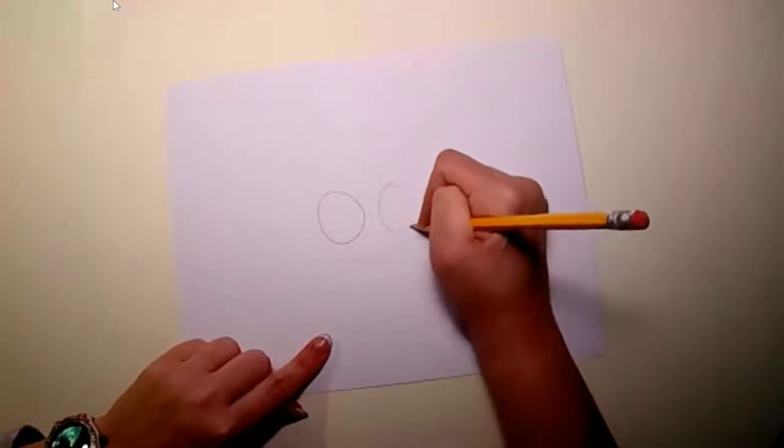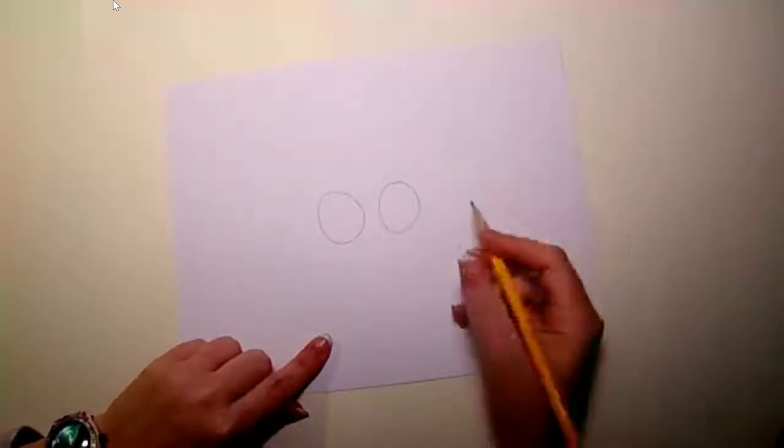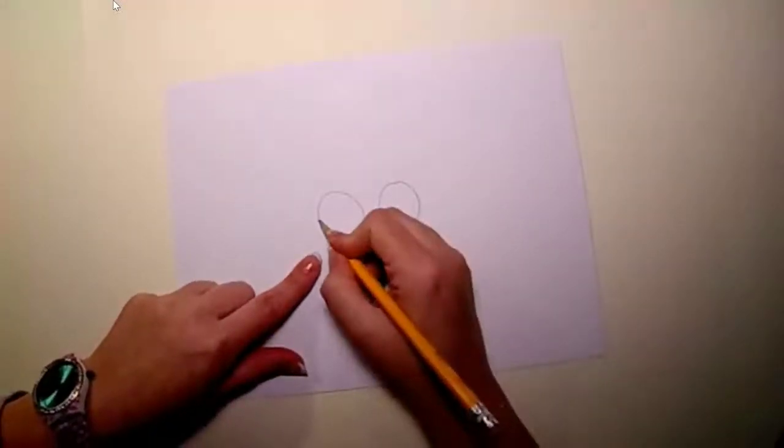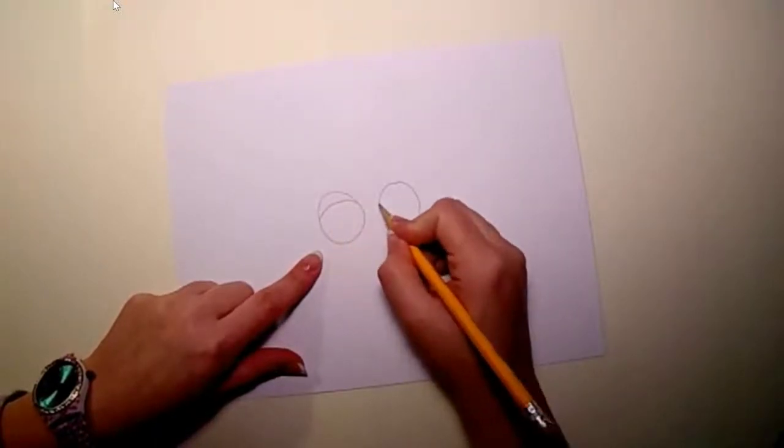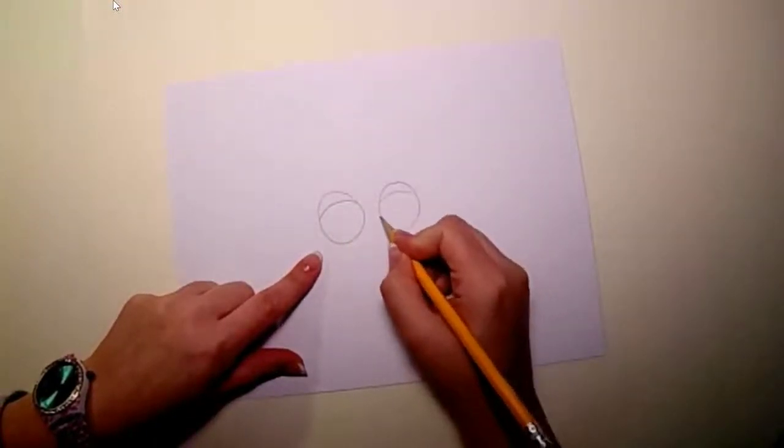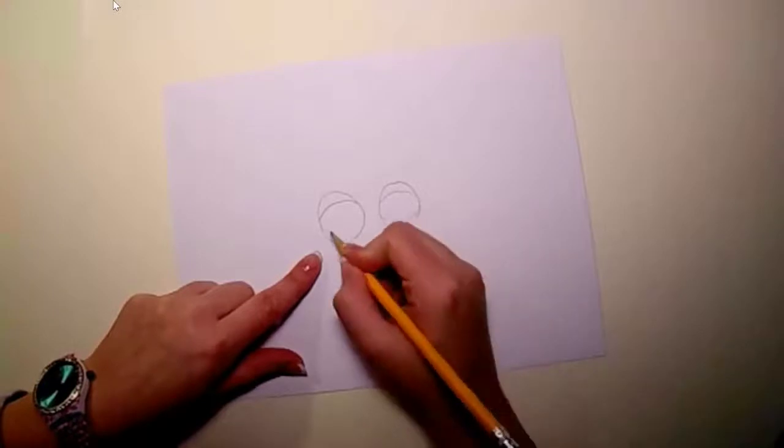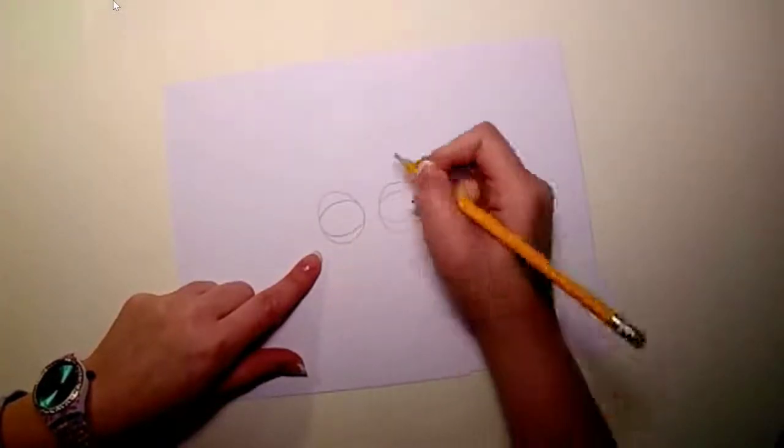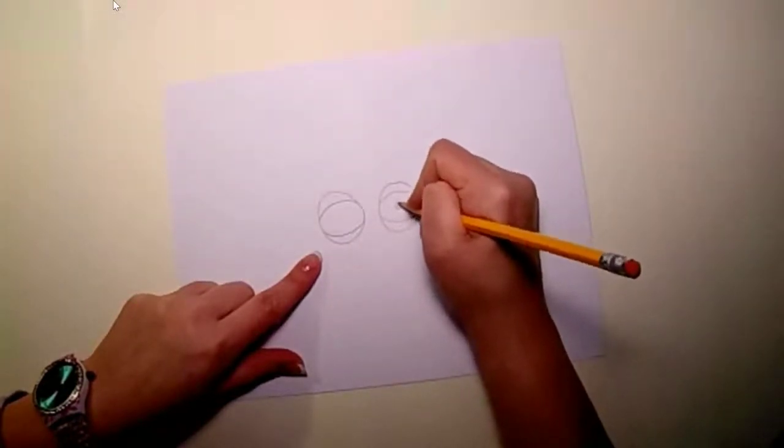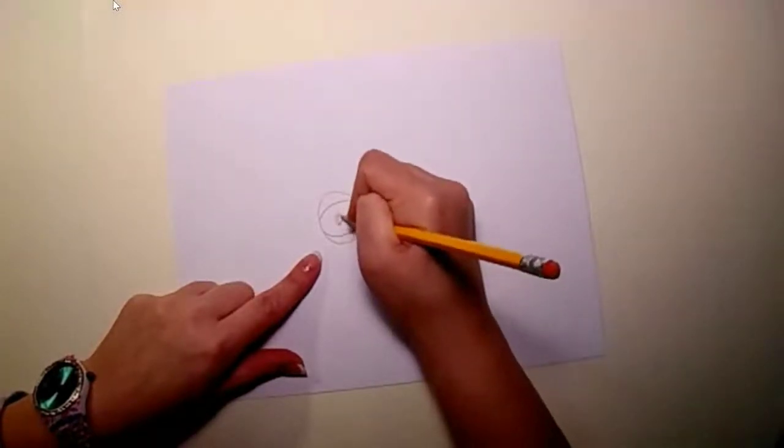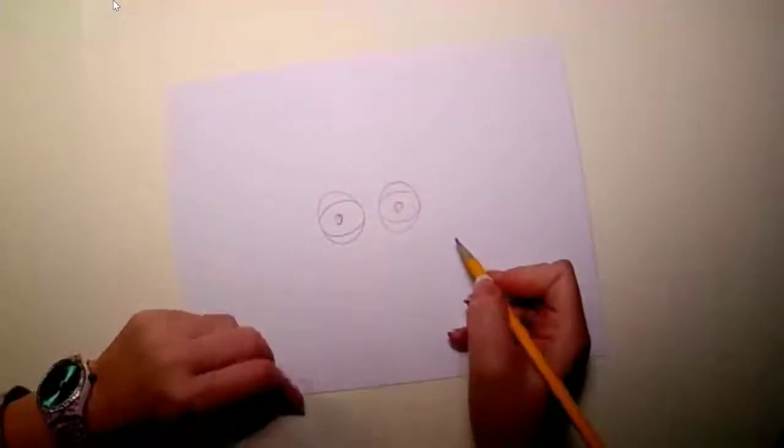So first we're going to draw the sad fish. We'll start with the eyes by drawing two circles, and Pout Pout when he is sad doesn't open his eyes all the way, so we are going to draw top and bottom lids using our rainbow and smile lines and putting our pupils in the center. This makes him look like he can just barely hold his eyes open.